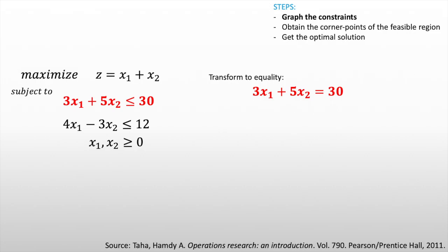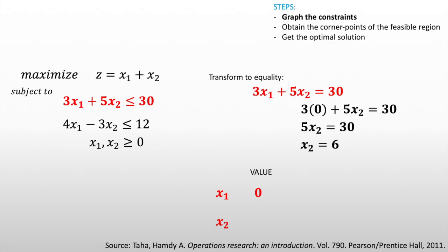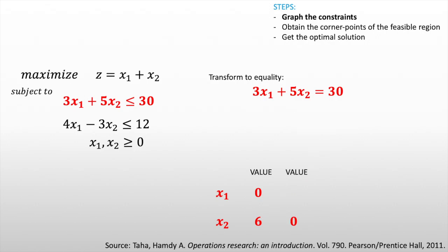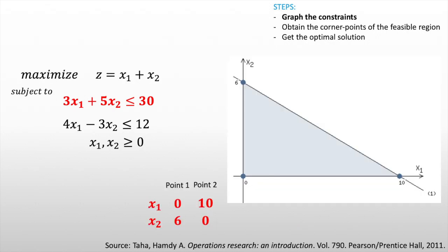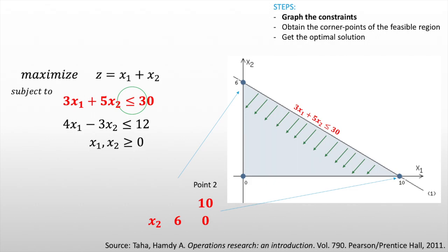Then we graph this using the intercept method. First, let x1 equal 0 and substitute into the constraint: 3(0) plus 5x2 equals 30, giving x2 equal to 6 — our first point. Then let x2 equal 0, giving x1 equal to 10 — our second point. With these two points, we can graph the first constraint. Since the constraint is less than or equal, only the values below that line are feasible, so the shaded area below the line will contain our solution.